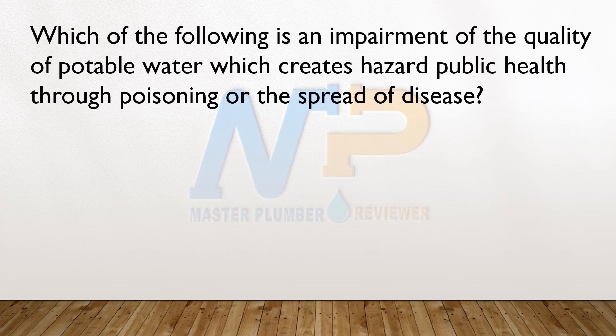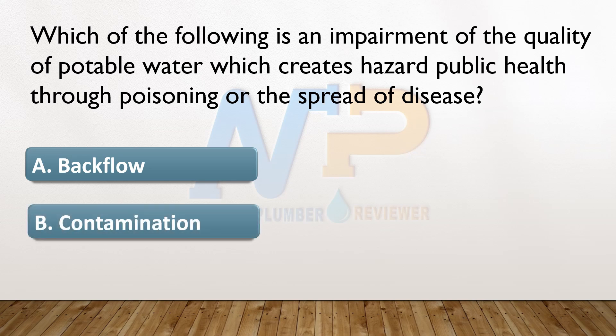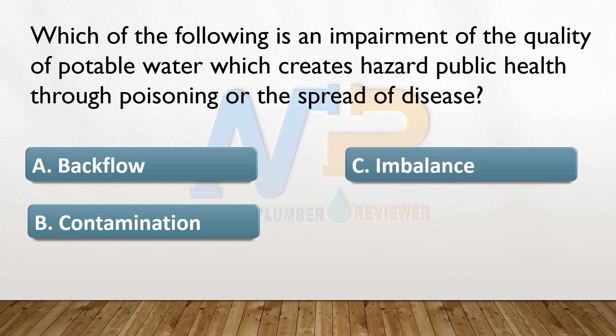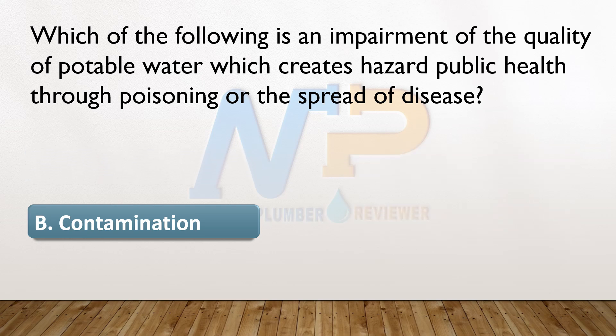Which of the following is an impairment of the quality of potable water which creates a hazard to public health through poisoning or the spread of disease? A. Backflow. B. Contamination. C. Imbalance. D. Risk danger. The answer: B. Contamination.